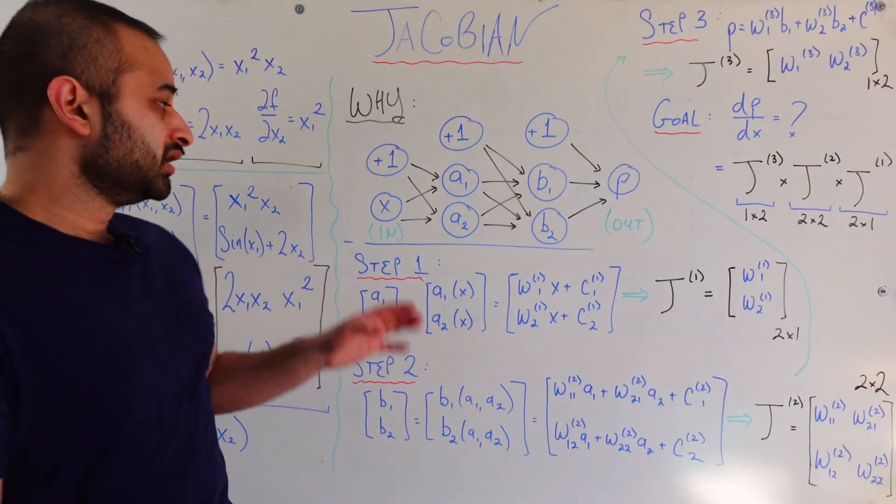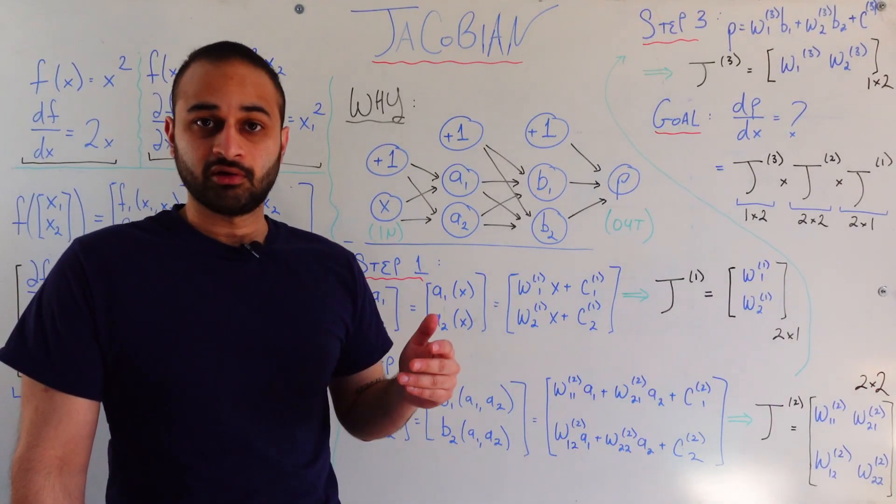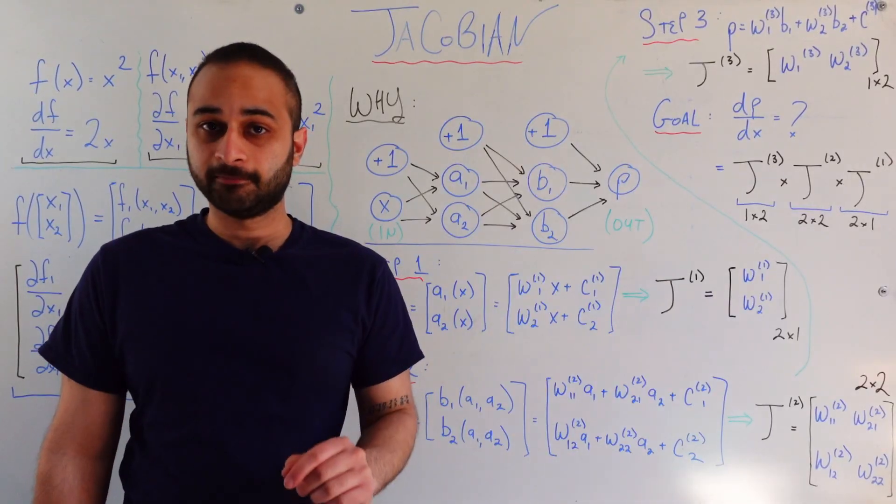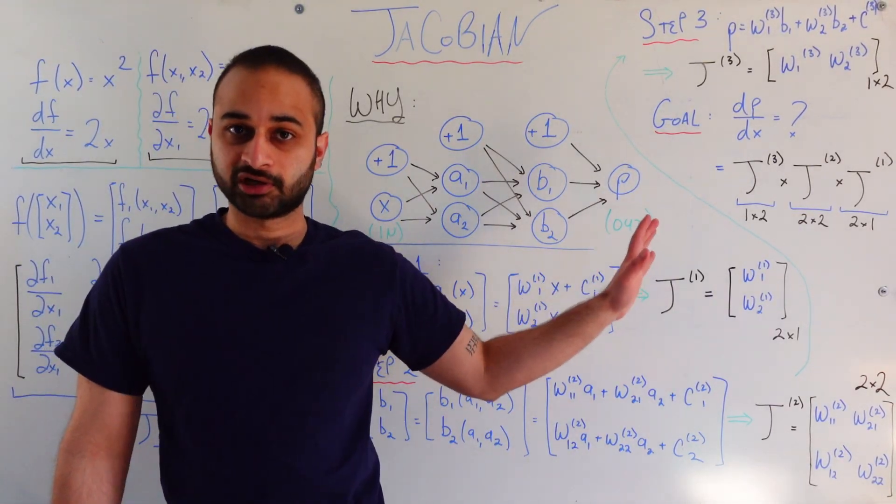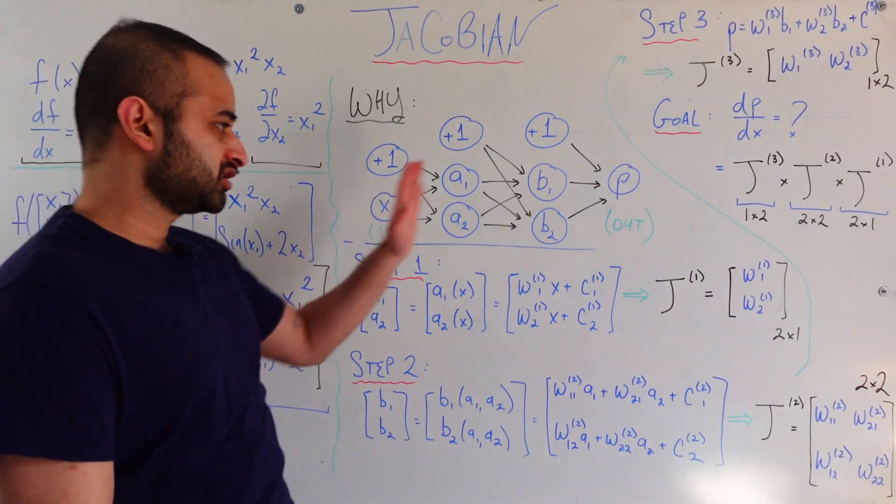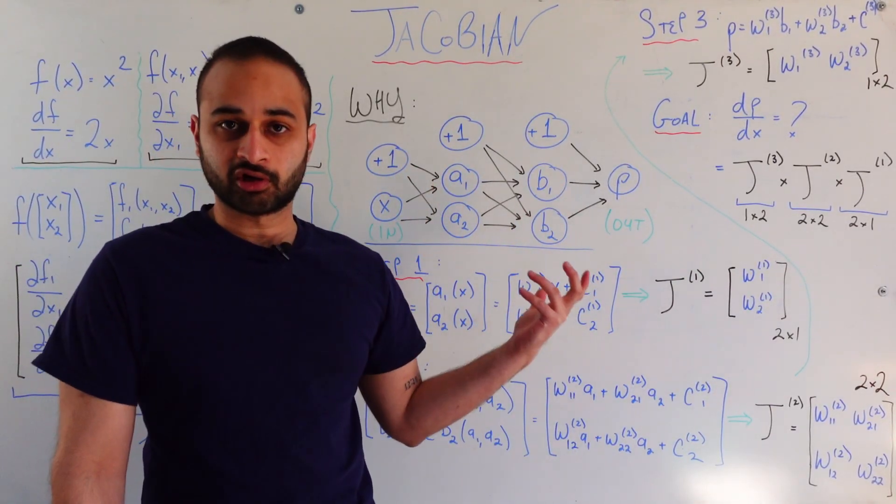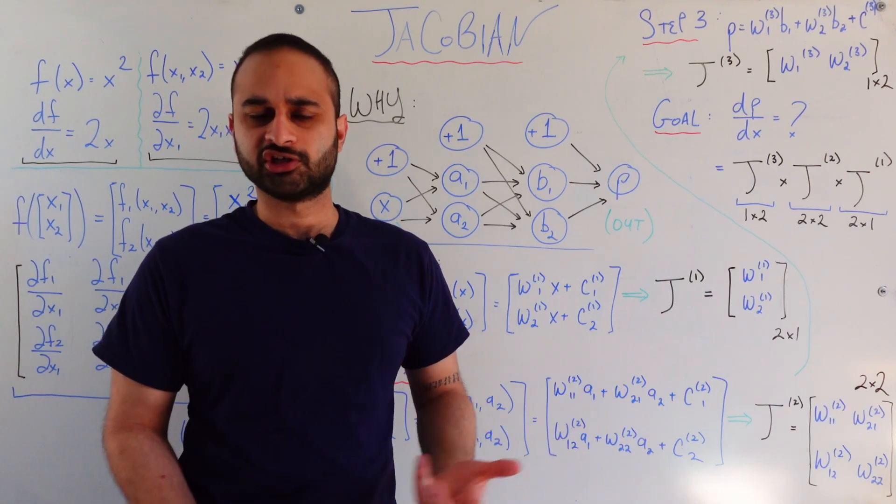if I change x by a little bit, what is the effect that has on the final output p? To do that we're going to need to better understand what goes on in the middle because obviously we're not going directly from x to p, there's some machinery in the middle going on. So let's talk about it step by step, it's just a three step process.